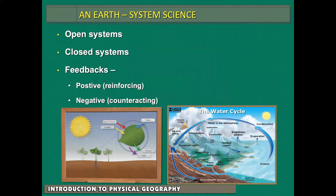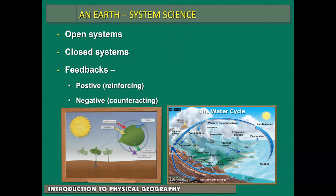Earth is a system-driven science. There are open systems and closed systems. Think about the water cycle — water evaporates, it condenses, it falls again as snow and ice and rain, it goes into the groundwater, it becomes part of streams or rainfall and goes right back into the ocean. The process repeats over and over again. Feedbacks are things that either reinforce something (positive) or counteract something (negative), and the whole world is full of these feedbacks constantly interacting with one another.